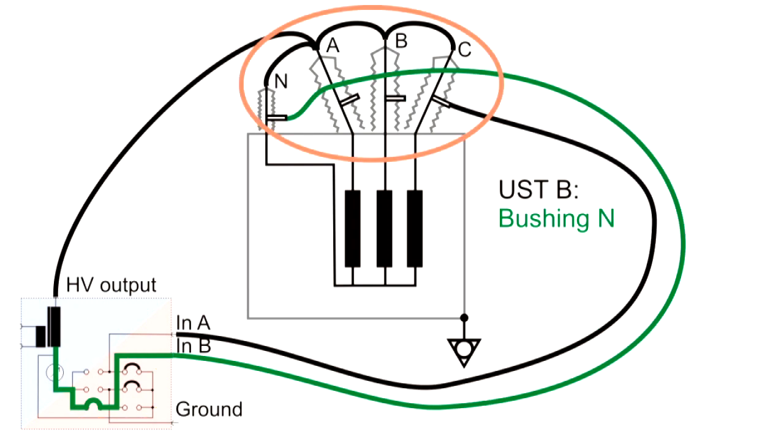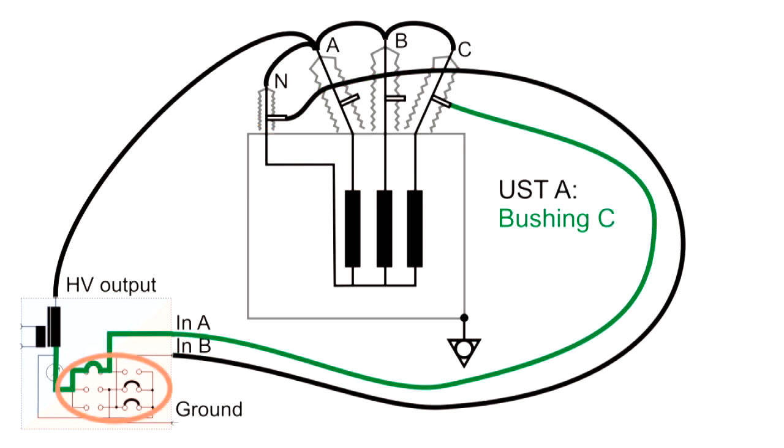Now we must reconnect the test leads once to measure bushings N and C. With USTB mode set in the test card, the test leads are now connected to bushing N. The next test card uses mode USTA to connect to bushing C, again without the need for any rewiring.